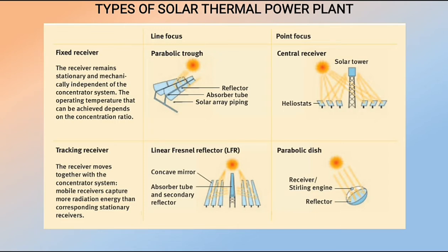Types of solar thermal power plants can be classified by focusing method. The first is line focus, where a collector pipe carries the working fluid to transport heat. The parabolic trough system and linear Fresnel reflector both operate on this line-focus method.